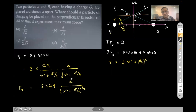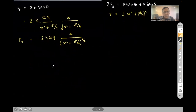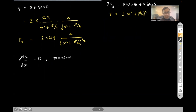To maximize the force, we take the first derivative of F_total with respect to x and equate it to zero. This gives us the condition for the maximum. When we differentiate and set dF/dx = 0, we get the value of x at which the force is maximum.